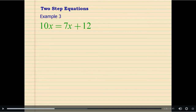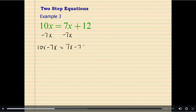Now we are going to look into two-step equations. To solve two-step equations, we are going to gather all the variables on one side of the equal sign. In this case, it will be easier to gather all of them on the left side. To do that, we are going to undo the positive 7x by adding negative 7x on both sides. We have 10x minus 7x on one side and 7x minus 7x plus 12 on the other side. 7x minus 7x is 0, and 10x minus 7x is 3x, so we have 3x equals...